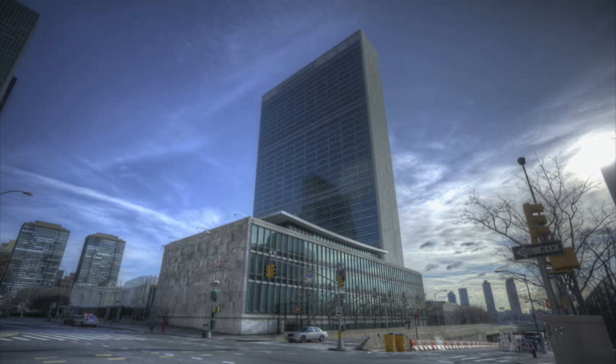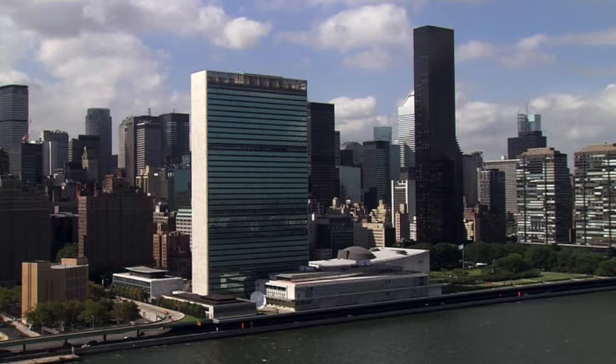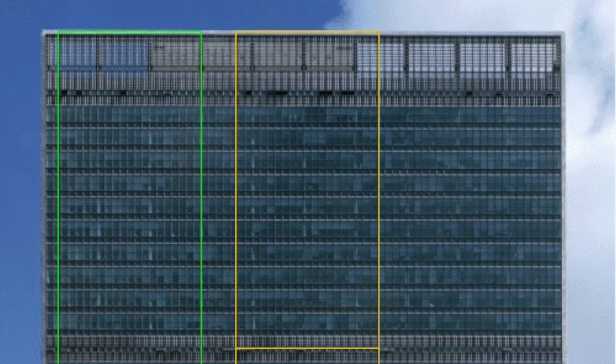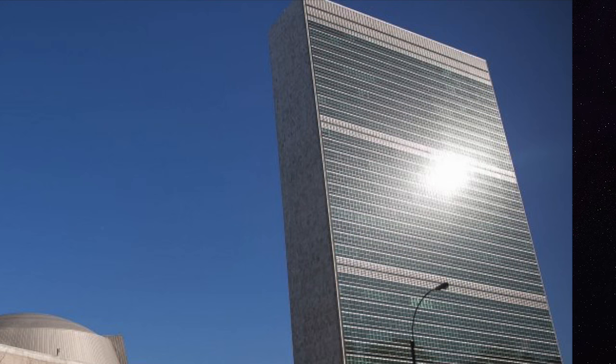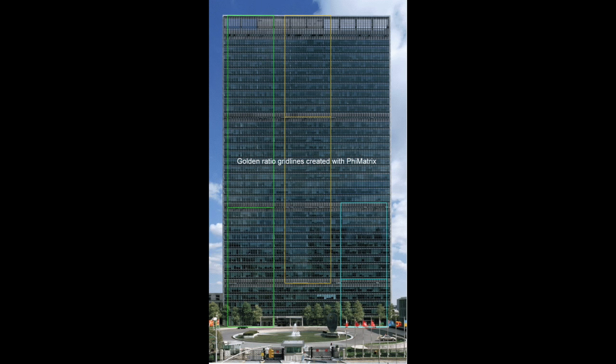The current headquarters of the United Nations was constructed on an 18-acre piece of land on the east side of Manhattan. When looking closely at the building, we observed that many of the windows in fact have the golden ratio when comparing their width and height. The more obvious application of the United Nations headquarters to the golden ratio is found when looking at the width of the entire building and comparing it to the height of every 10 floors.